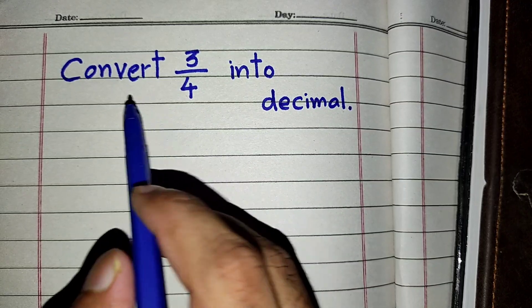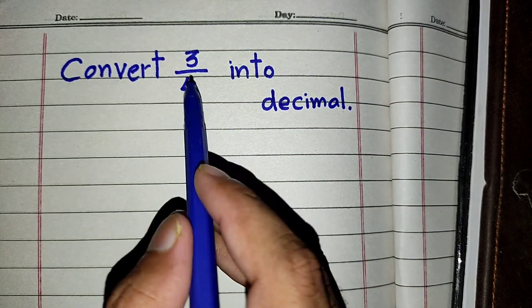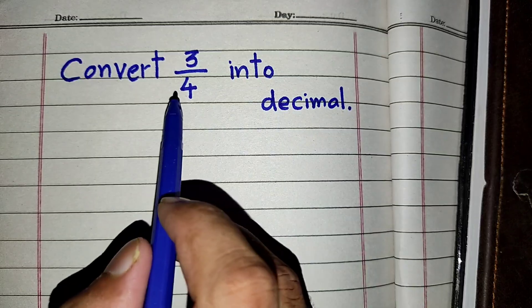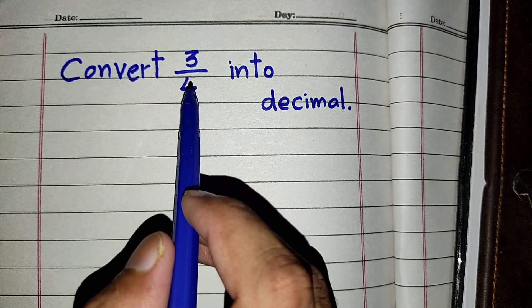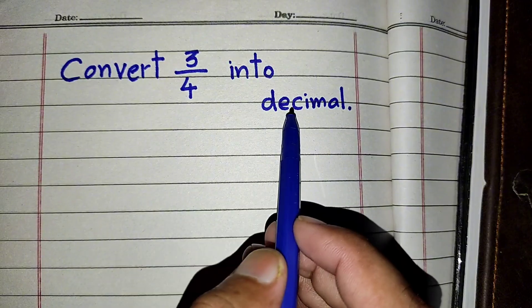In this video we are going to discuss how to convert a fraction into decimal form. We have a very simple question, the fraction 3 upon 4, and we have to convert it into decimal form.